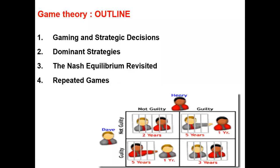In game theory we have the prisoner's dilemma, which we explained before — how each player will either confess or not. In this matrix, if we have two players, Henry and Dave for example, and we isolate both of them because they were found at a certain place committing a crime, and when investigated both of them said 'we didn't do it, not guilty' — so both of them will have two years in jail.